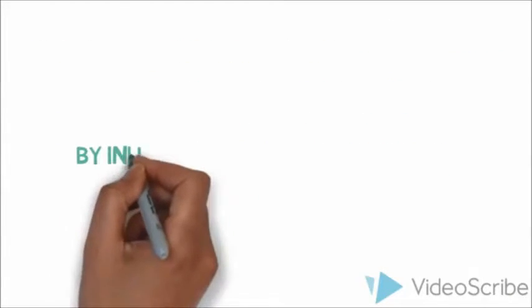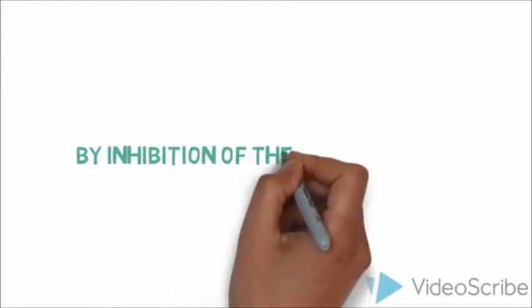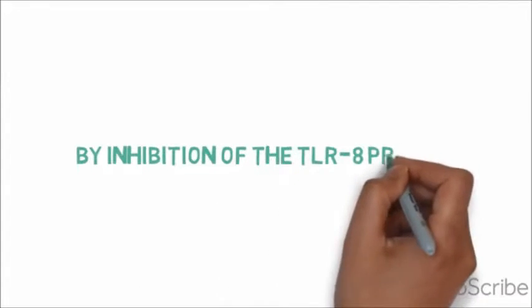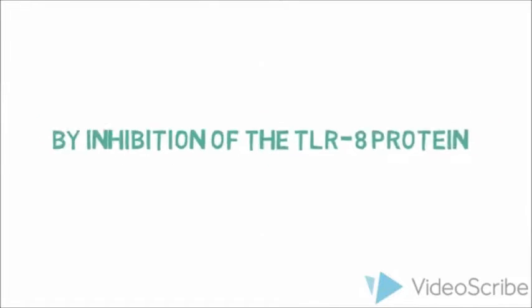This suggests that autoimmune diseases are quite similar, but not the same. Therefore, if a cure is found, for example by inhibition of the TLR8 protein, it can easily be applied to other similar diseases.